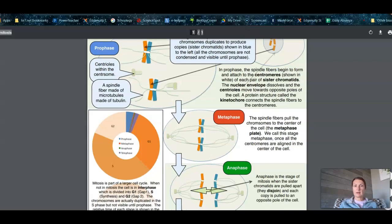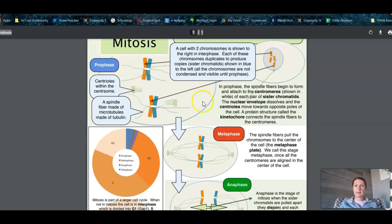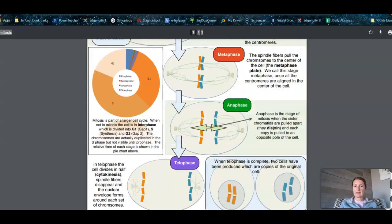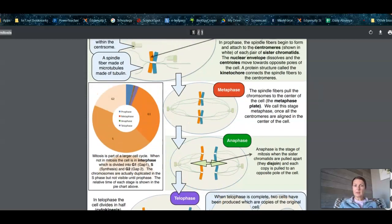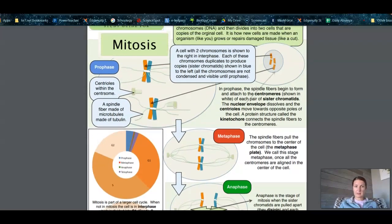So the four phases of mitosis are prophase, metaphase, anaphase, and telophase. Those are going to be your four phases of mitosis.